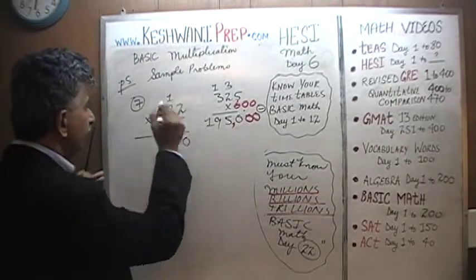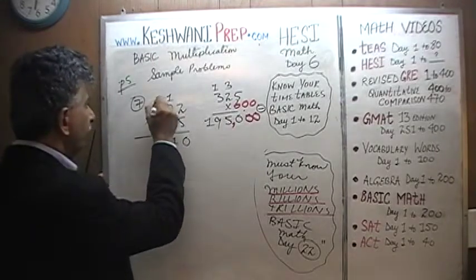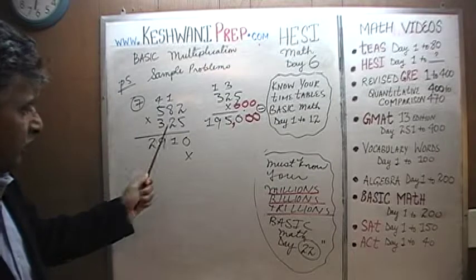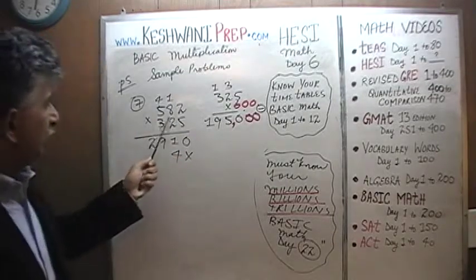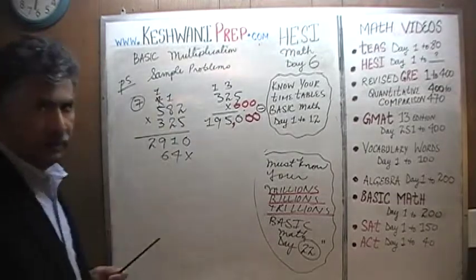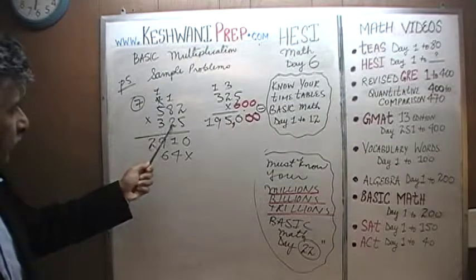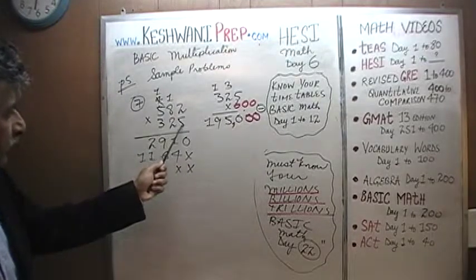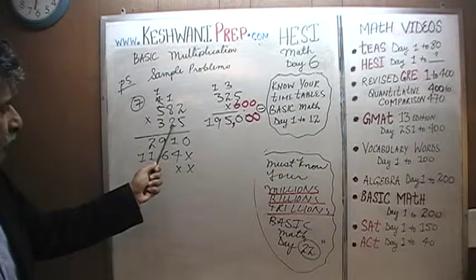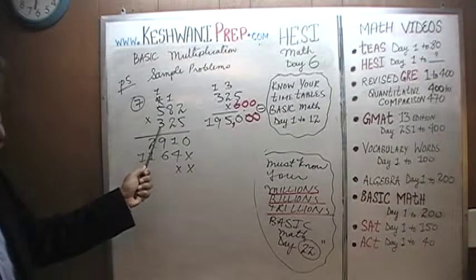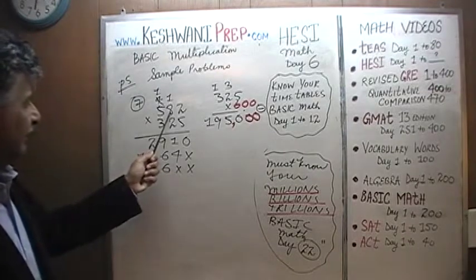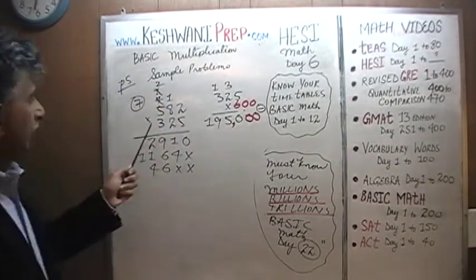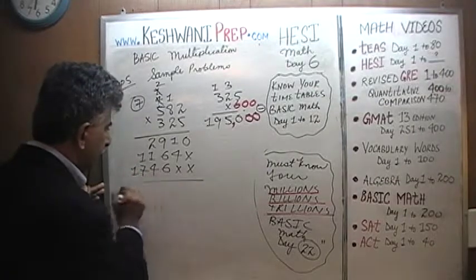Now let's do the full work for learning purposes. 5 times 2 is 10, carry 1. 5 times 8 is 40, plus 1 is 41, carry 4. 5 times 5 is 25, plus 4 is 29. Hold the unit digit — we are now dealing with the tens digit. 2 times 2 is 4. 2 times 8 is 16, carry 1; cross out and carry. 2 times 5 is 10, plus 1 is 11. Hold two places. Now dealing with the hundreds digit: 3 times 2 is 6. 3 times 8 is 24, carry 2. 3 times 5 is 15, plus 2 is 17.